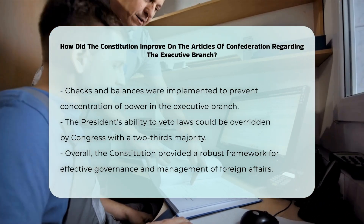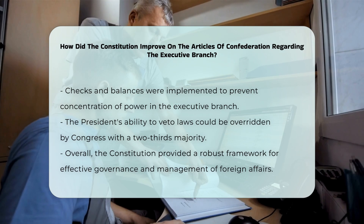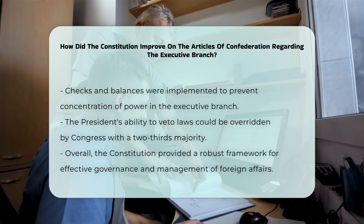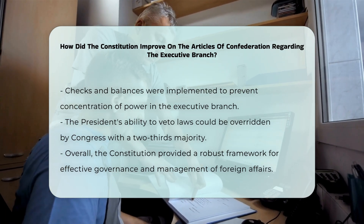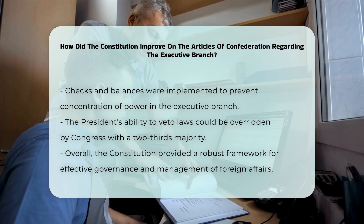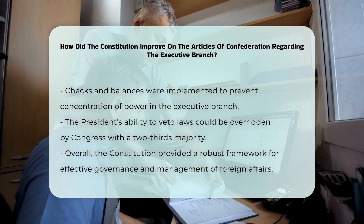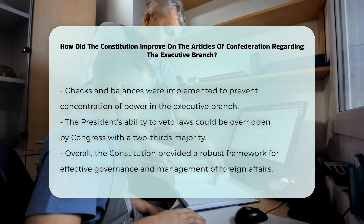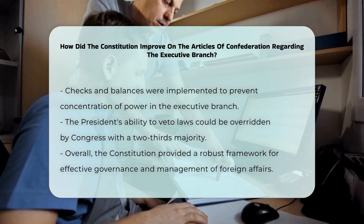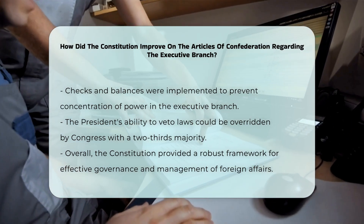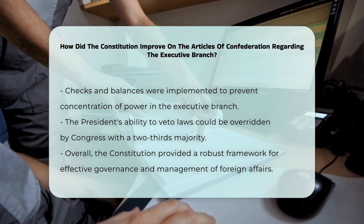In summary, the Constitution improved upon the Articles of Confederation by establishing a robust Executive Branch with clear powers and responsibilities, ensuring effective governance and the ability to enforce laws and manage foreign affairs.